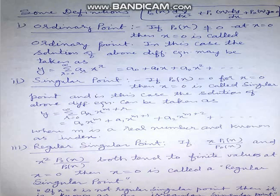Regular singular point: If x·p1(x)/p0(x) and x²·p2(x)/p0(x) are both finite when x = 0, then such a point is known as a regular singular point. One important note: if x = 0 is not regular, it will be called an irregular singular point.